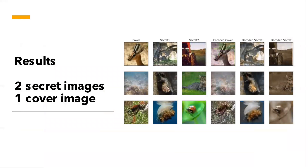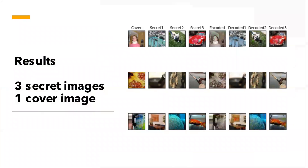For implementation, we used two secret images and passed them to our model, and we were able to successfully retrieve them. The figure shows the cover image, secret images, encoded cover image, and retrieved secret images. Next, we did the same to hide three secret images. The retrieved secret images look similar to the original secret images to a great extent. However, as you can see, the encoded cover images are more lossy compared to the case where we used only two secret images.